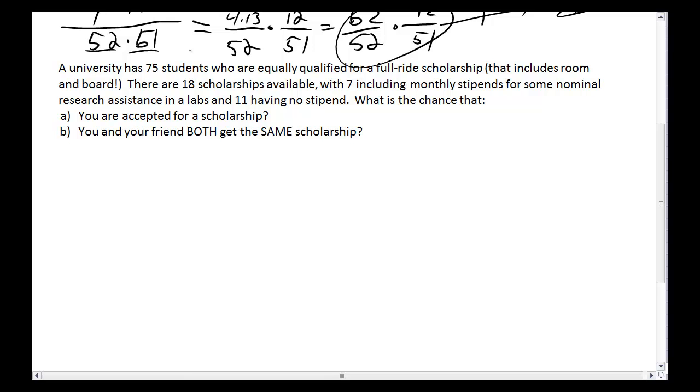What's the chance that you, A, you're accepted for a scholarship if you're one of these 75 students? These are all equally qualified. And B, if you and your friend are one of these 75 students, that you both get the same scholarship. So nobody's jealous. Well, first of all, I've got some key words here. Equally qualified. This is kind of hard to do in the real world, but we're supposing they are actually equally qualified. So we're just going to draw these people out by lottery.